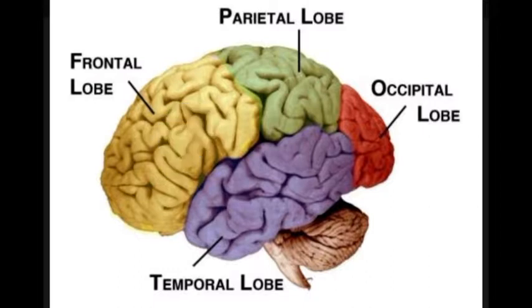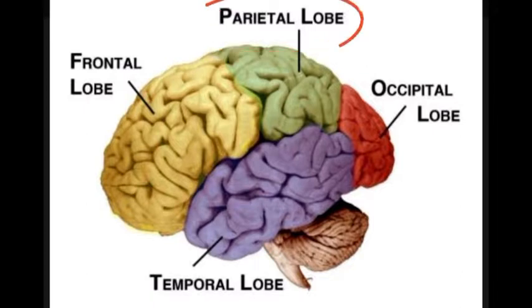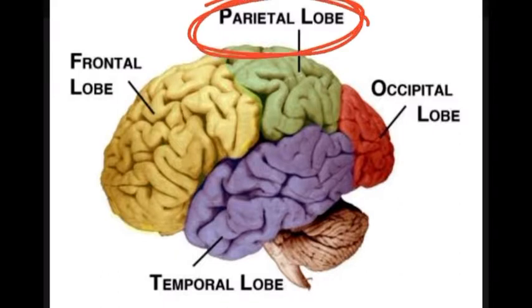Next is the parietal lobe. The parietal lobe is responsible for knowing right from left, your sensation, reading, and understanding.